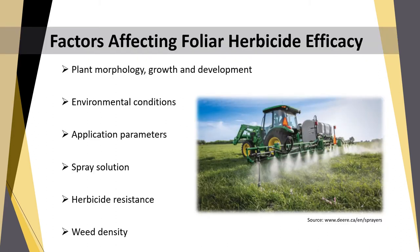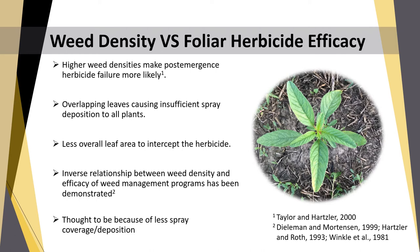As most of you know, there are several factors affecting foliar herbicide efficacy, and one of them is wheat density, which will be the focus of this presentation. Scientific literature says that higher wheat densities make post-emergence herbicide failure more likely. One reason for this is overlapping of leaves causing insufficient spray deposition on all plants. Also, plants growing in competition may not have enough leaf area to intercept the herbicide. An inverse relationship between wheat density and efficacy of weed management programs has been demonstrated and is thought to be because of less spray coverage or deposition.